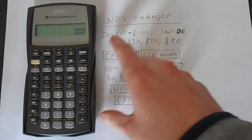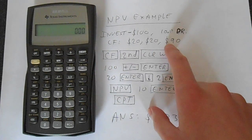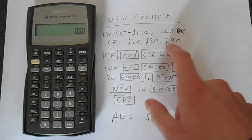In this example we're going to invest $100, use a 10% discount rate, and have the following cash flows: $20, $20, and then $90.